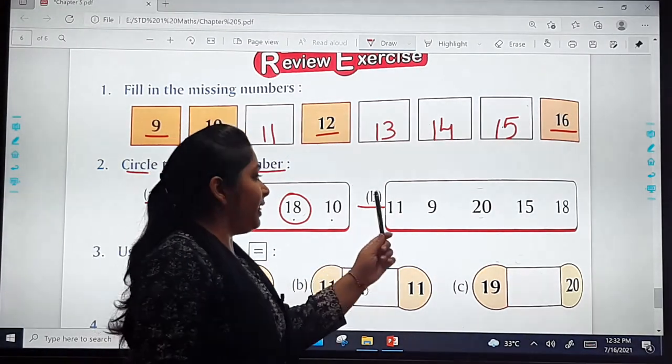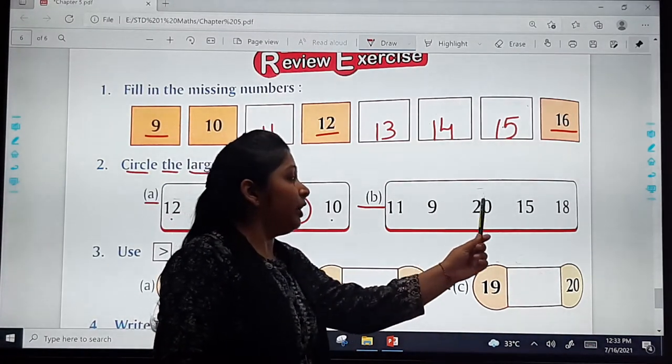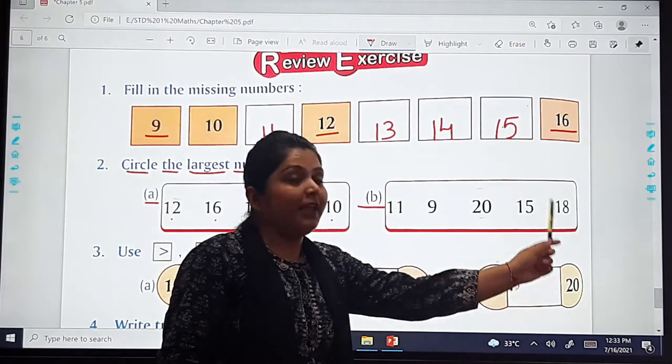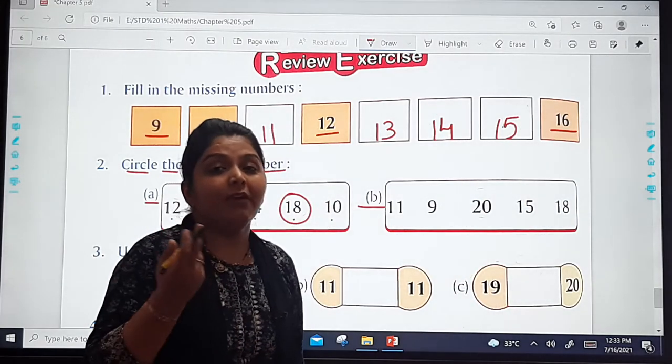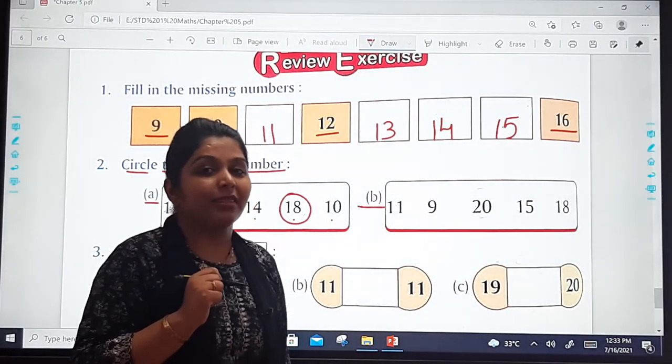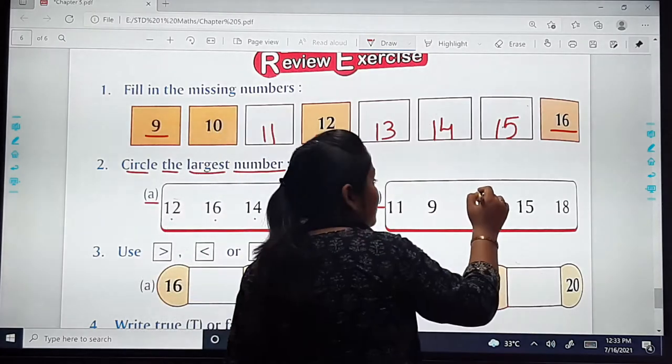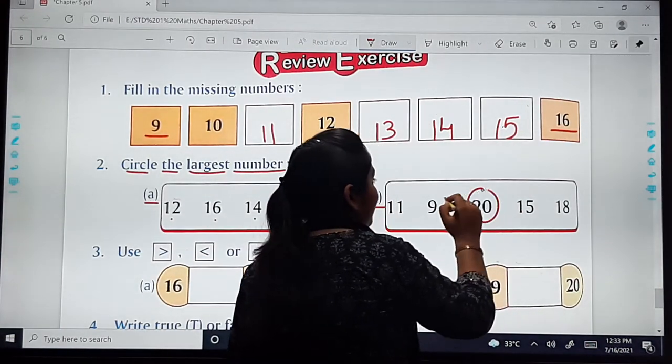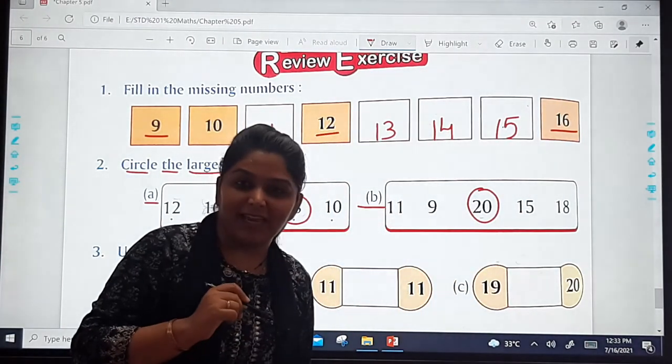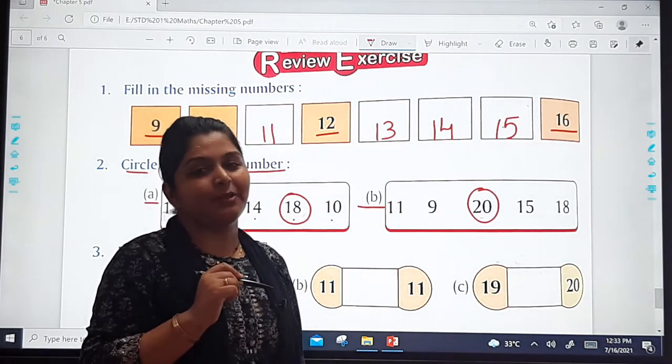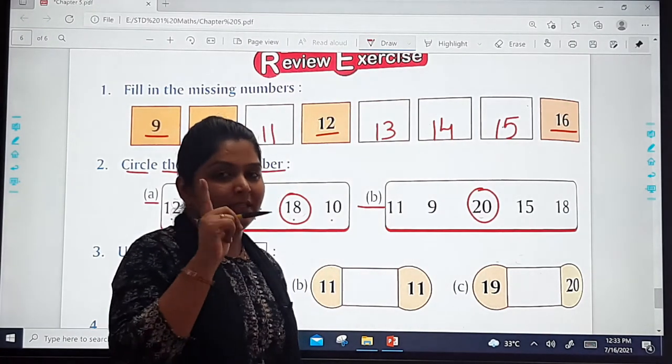Again I will repeat: 11, 9, 20, 15, 18. Tell me which is the largest one. That is your number 20. So you will circle number 20 like this. Understood? Is it clear?